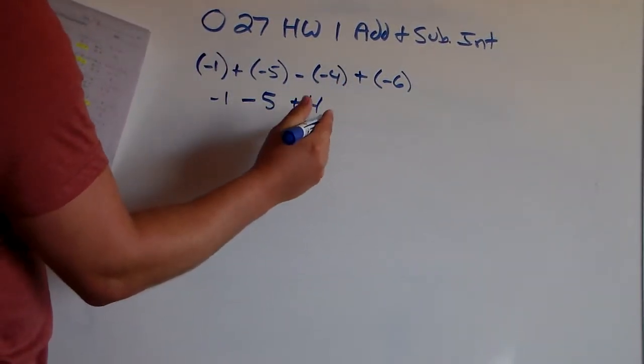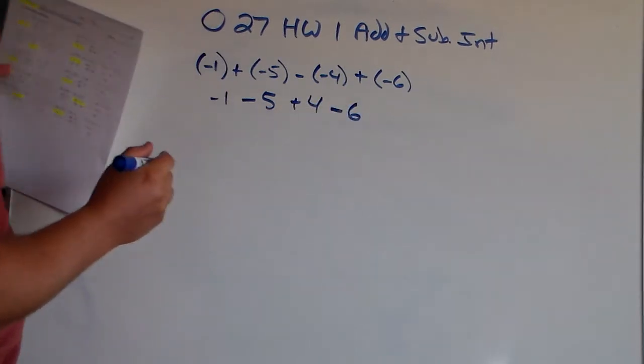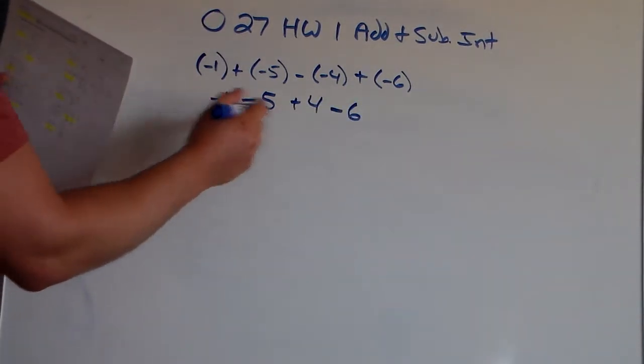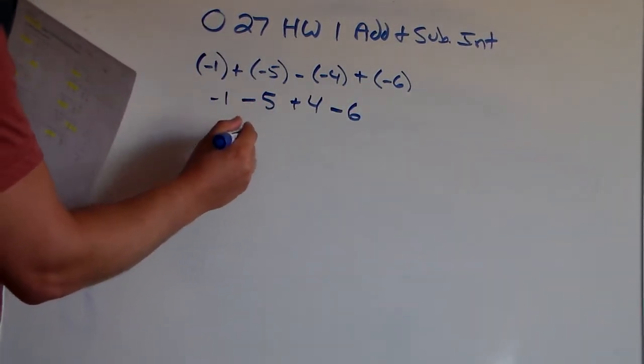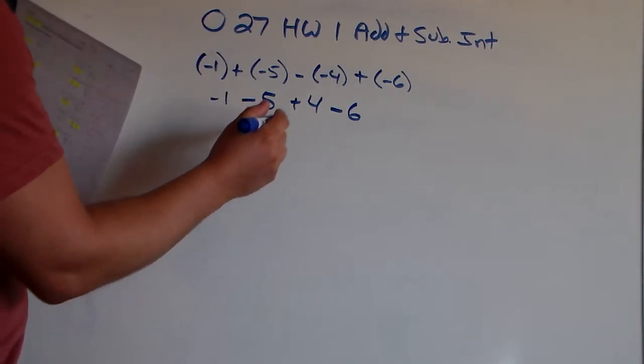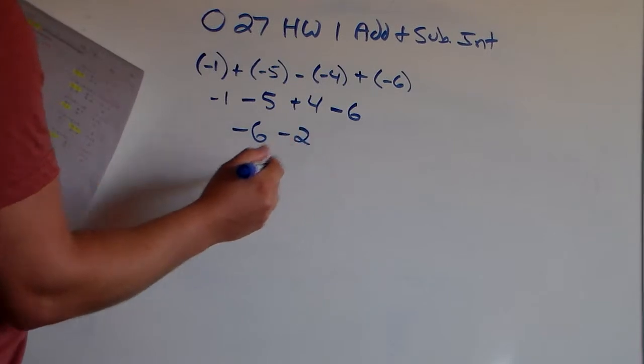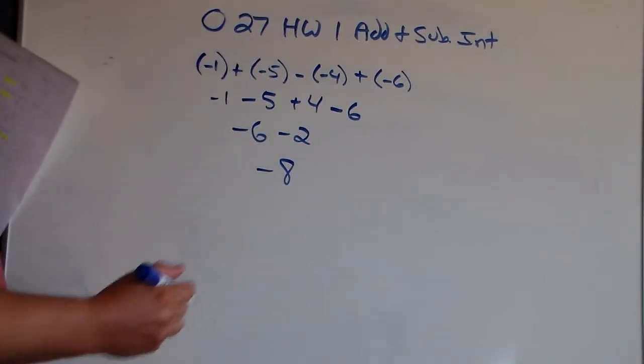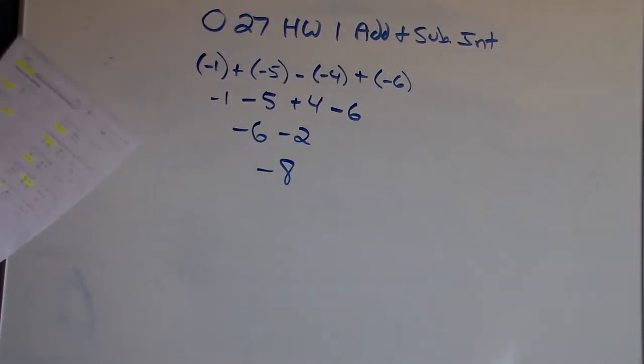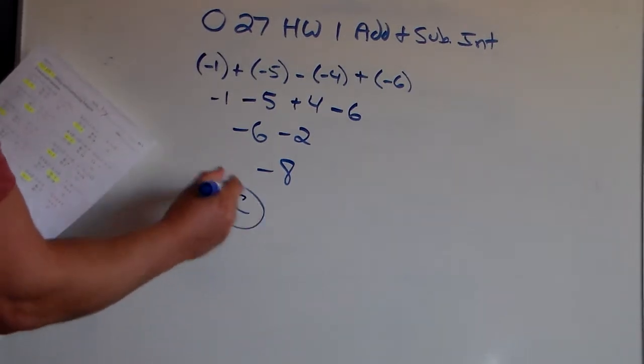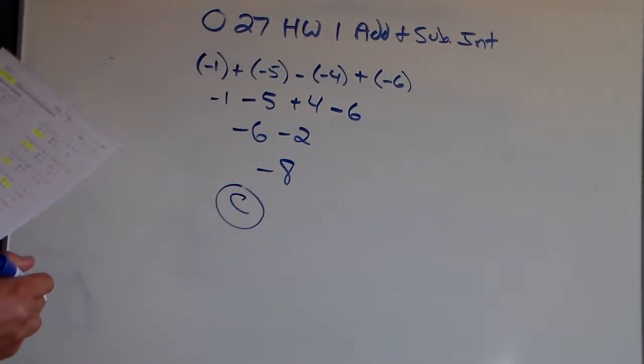And a positive and a negative, back to back, makes a negative. And we go left to right. Negative 1 minus 5 gives us negative 6. Positive 4 minus 6 gets you negative 2. Then negative 6 minus 2 gets you 8. That's the answer to number 1, which is C in the multiple choice, C equals negative 8. That's what we did when we evaluate each expression.